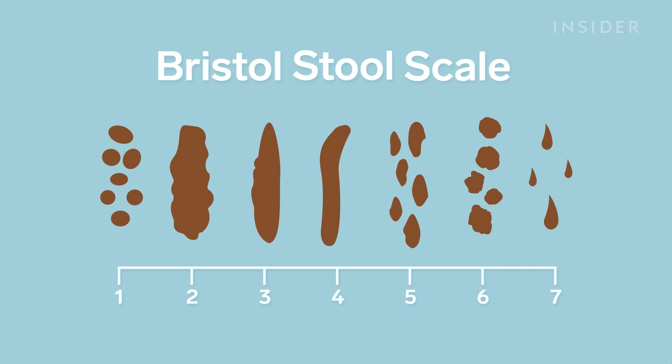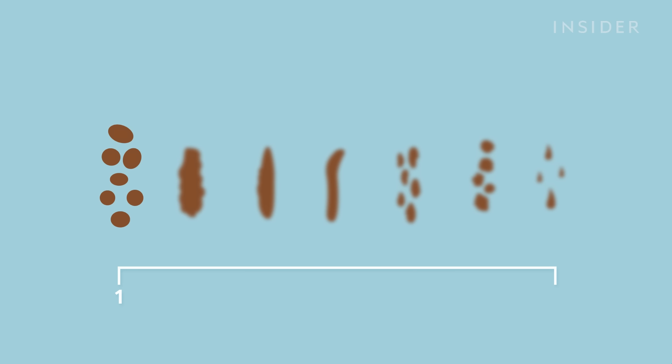But real quick, let us introduce you to the Bristol Stool Scale, a handy-dandy chart listing the different types of poop your body can make. They range from type 1, hard lumps, to type 7, totally liquid. When it comes to number 2, you actually want to be a type 3 or 4.